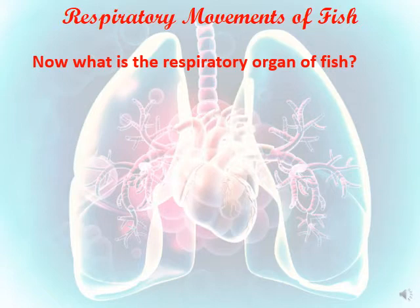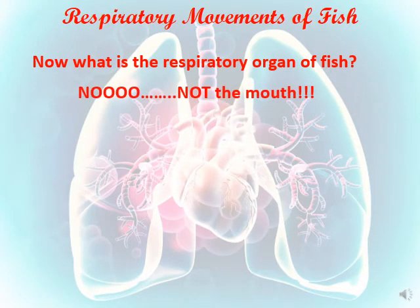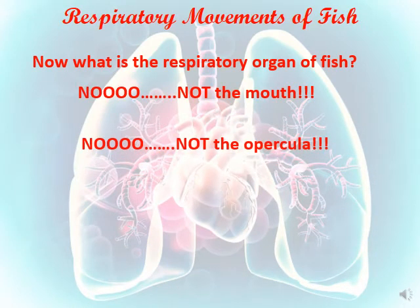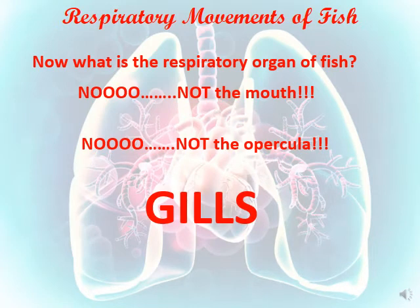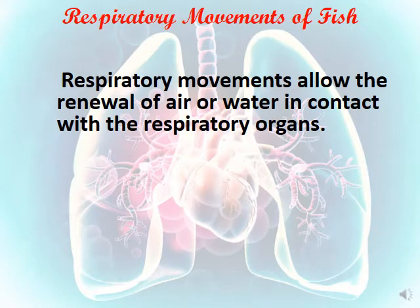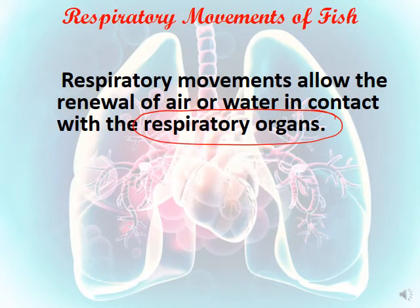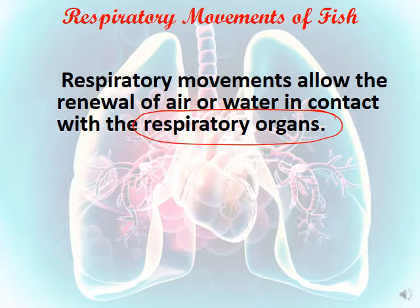So what is the respiratory organ in the fish? It's not the mouth, it's not the operculum — it's the gills. The gills are the respiratory organ of the fish. Respiratory movements allow the renewal of water or air in contact with the respiratory organ. Inhalation and exhalation allow the renewal of air for land animals like insects and mammals, or water for aquatic animals like fish, bringing new air or water in contact with the respiratory organ — the lungs, trachea, or gills.